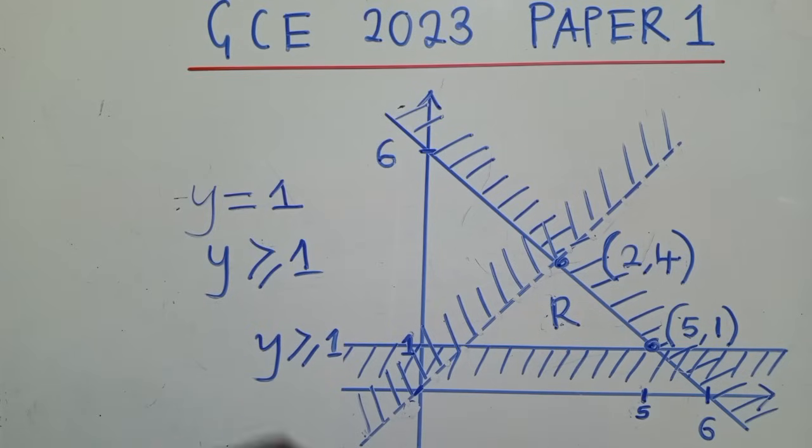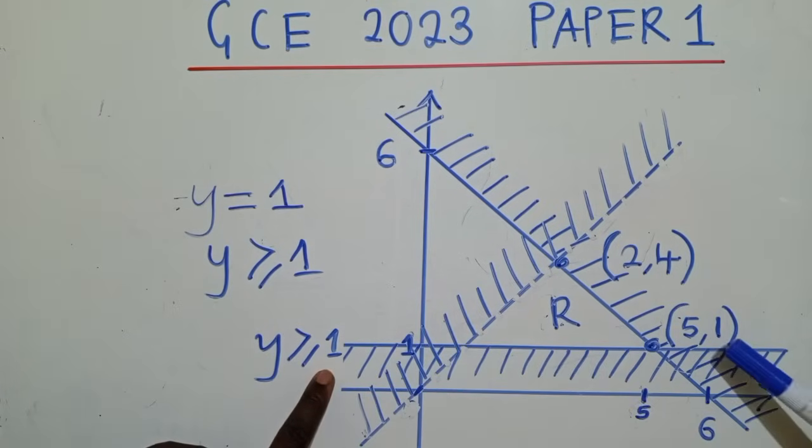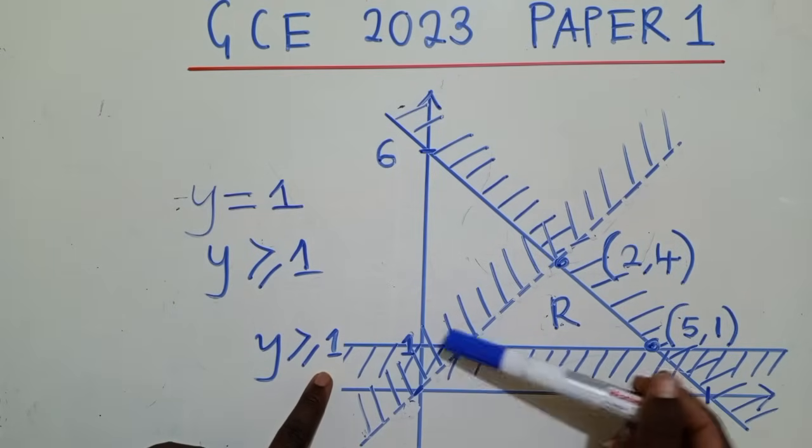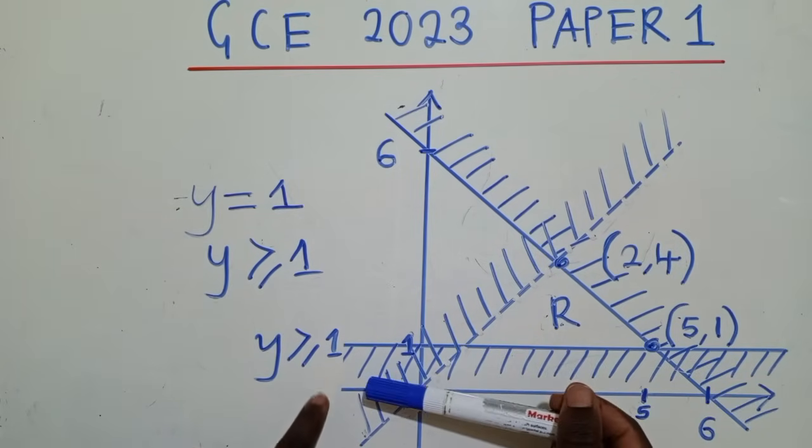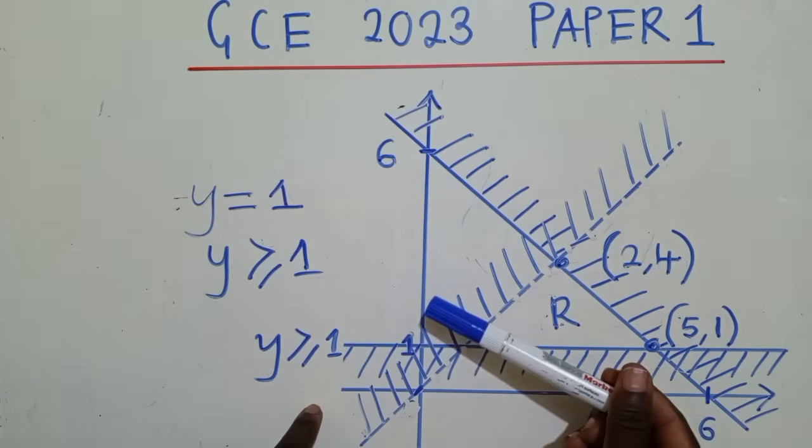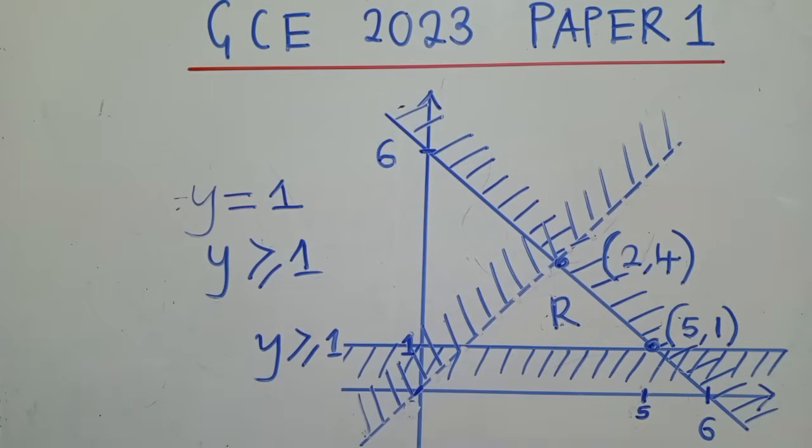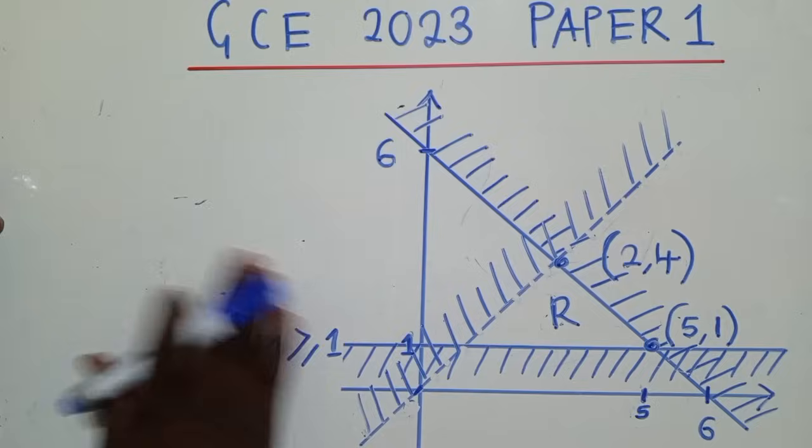But why am I saying y is greater or equal to 1? So what we basically do with inequalities, when you're able to see nicely, the bottom part is what is shaded. Can you see this line? Now the bottom part is what is shaded. So with inequalities, we get the opposite. So the opposite will be greater. So you say y is greater or equal to 1. So that's it.